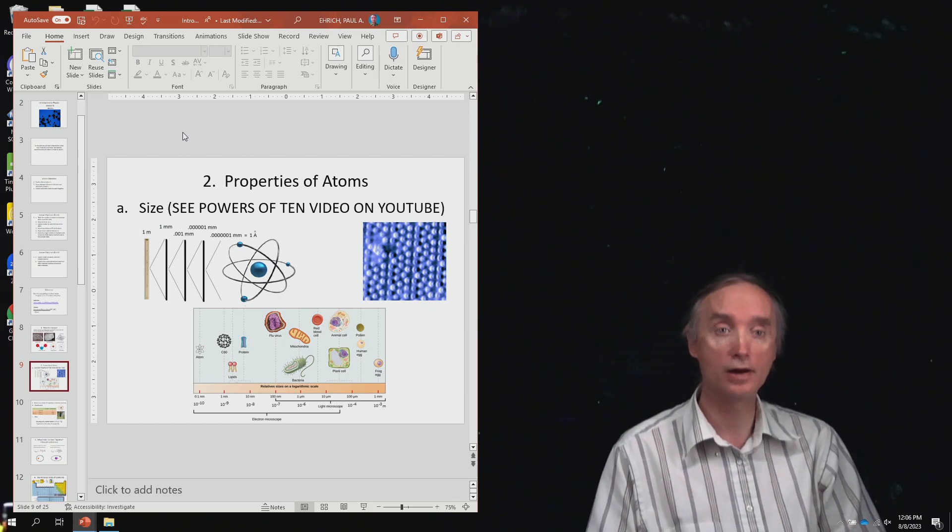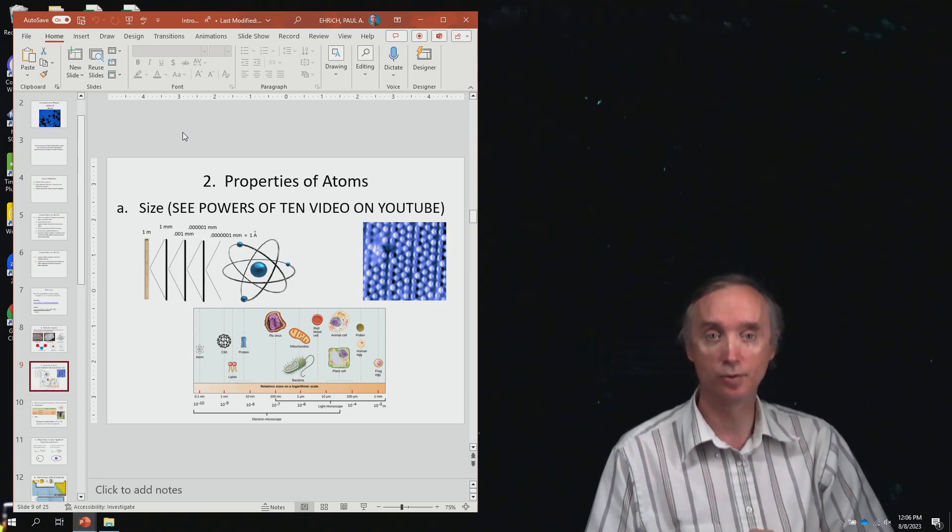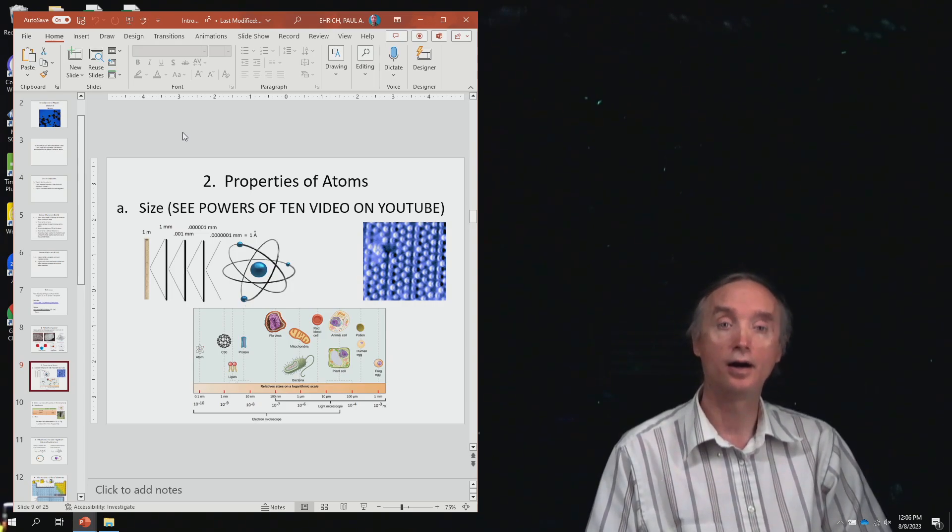You don't need to know how small they are, but you do need to know that you cannot see an atom by using visible light. So even using the best possible microscope from biology, using visible light, you cannot see an individual atom. However, by using an electron microscope, you can.